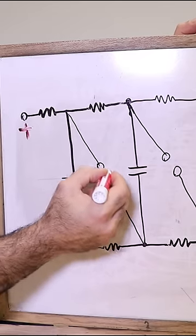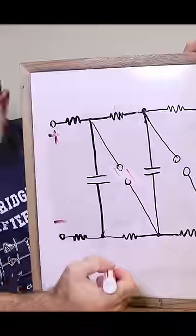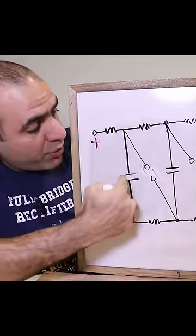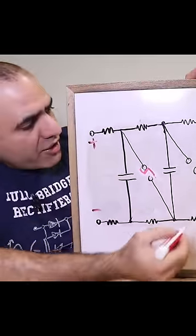A low resistance arc jumps across the first spark gap, shorting these two points, putting these two capacitors in series. This triggers all the other spark gaps. All of a sudden, you have a huge sum of voltage that can arc across a much longer distance to ground.